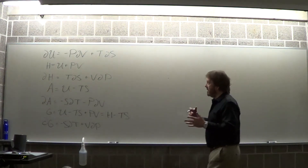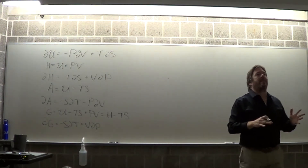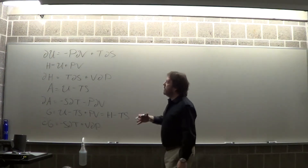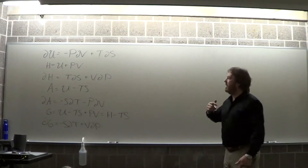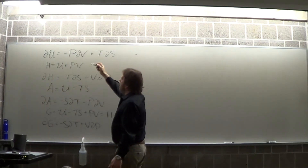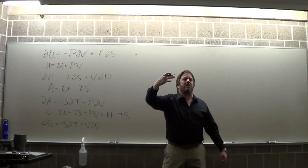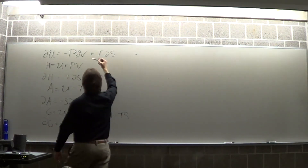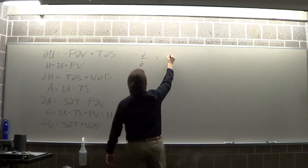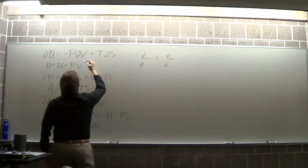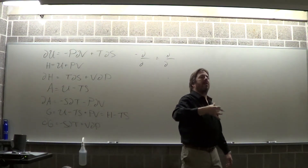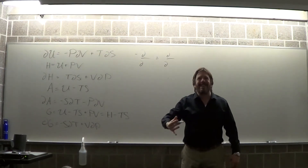Maxwell relations are necessary tools for about half the derivations on your homework and — wink wink — on the test. They come from Euler's test for exactness. Watch the video if you haven't seen it. Maxwell relations are just tools for derivations. If I ask you to derive a Maxwell relation on the exam, I'd want you to start with Euler's test and then substitute from there.